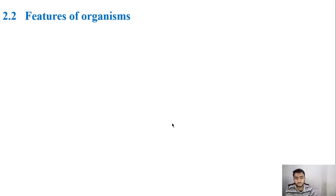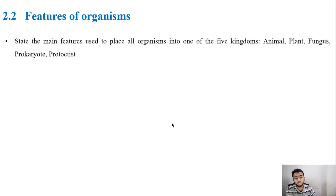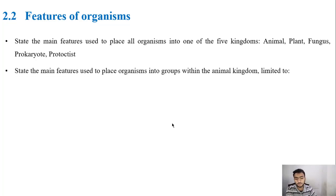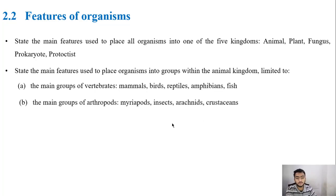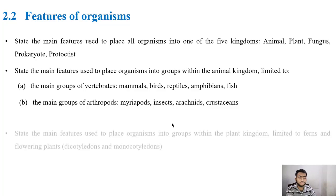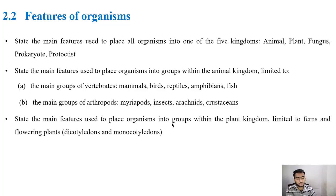Moving to the learning outcomes, we will learn the main features used to place all organisms into one of the five kingdoms: Animalia, Plantae, Fungi, Prokaryotae, and Protoctista. We will also take up the features used to place organisms into two broad groups of the animal kingdom: vertebrates — which includes mammals, birds, reptiles, amphibians, and fish — and invertebrates or arthropods, which includes myriapods, insects, arachnids, and crustaceans.